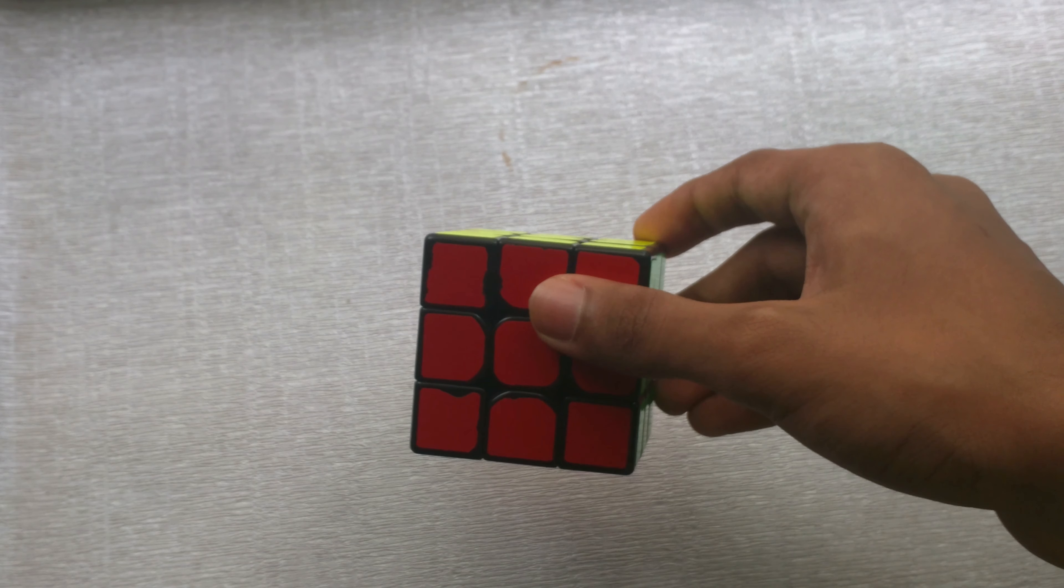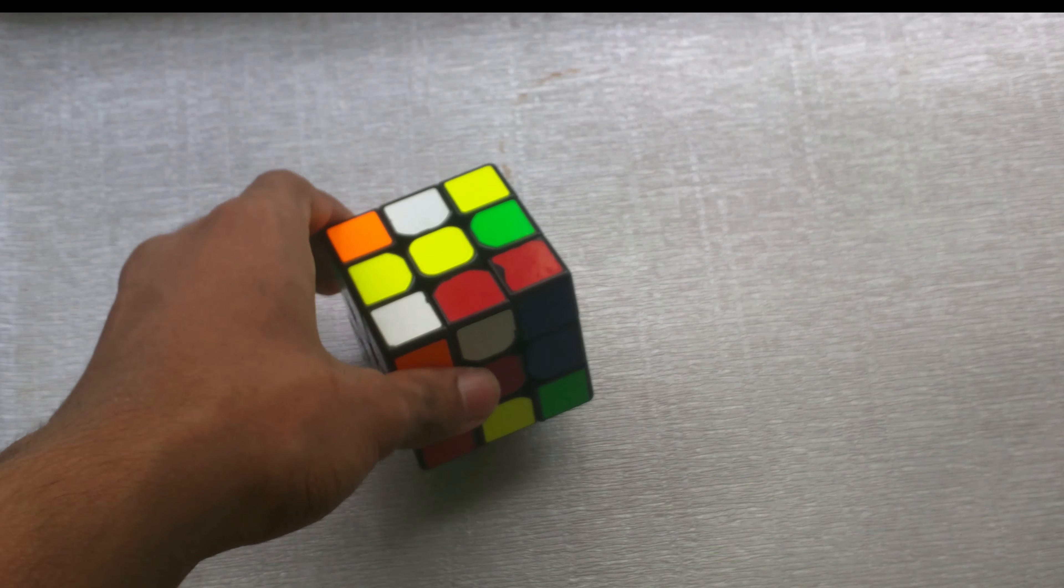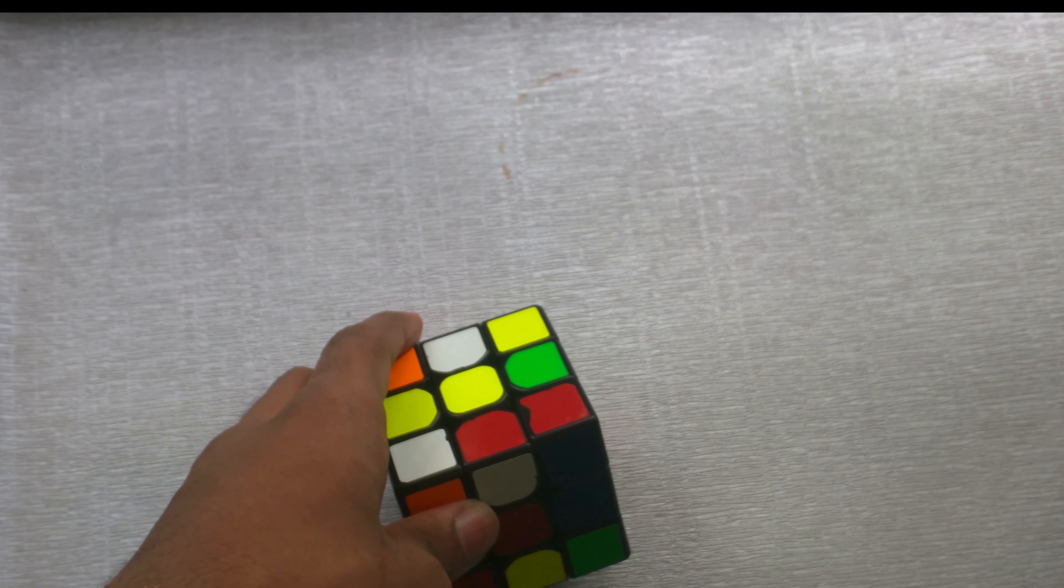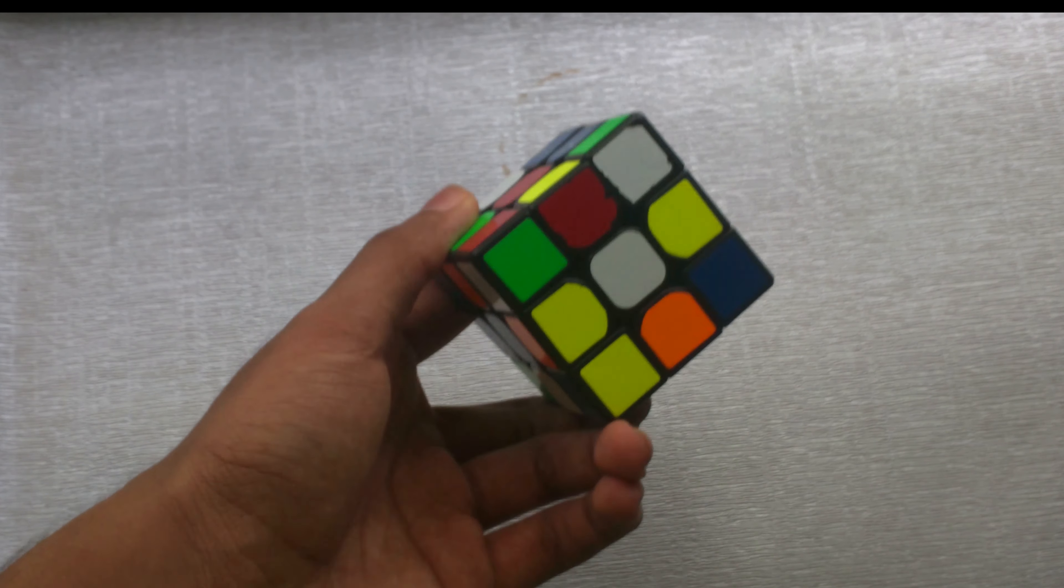So I'm going to scramble the cube and then I'm going to be right back. In this video, I'm just going to be teaching the cross and the F2L. The OLL and PLL I'm going to be teaching in the next video. So first of all, the cross.